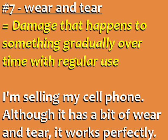Number 7: Wear and tear. The damage to something that happens gradually over time from regularly using it. For example: I'm selling my cell phone. Although it has a bit of wear and tear, it works perfectly.